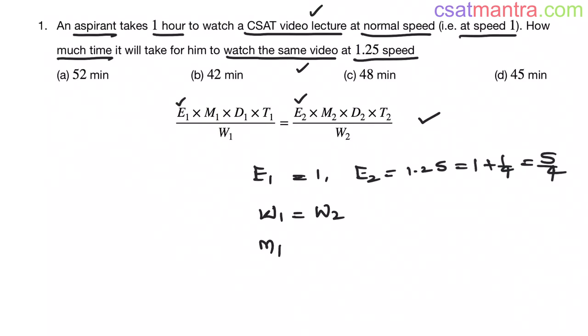And M1 is equal to M2, same person is watching. And T1 is equal to 1 hour. T2 we have to find out. D1 and D2, you can ignore them because these are not given. Now, let's substitute these values in this equation. E1 is 1, M gets cancelled out, Ds are ignored, W1 is equal to W2.